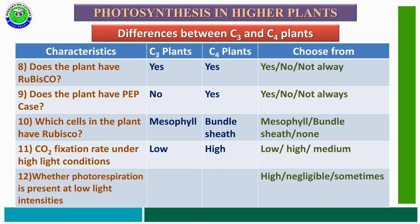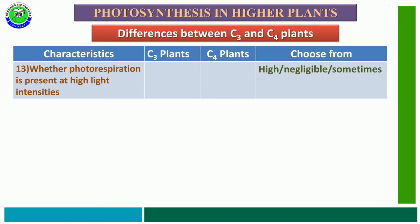The twelfth characteristic feature is whether photorespiration is present at low light intensity. The options are high, negligible, or sometimes. In both C3 and C4 plants, photorespiration at low light intensity is negligible. The thirteenth characteristic feature is whether photorespiration is present at high light intensity. The options are high, negligible, or sometimes. In C3 plants, photorespiration at high light intensity is high, but in C4 plants it is negligible.